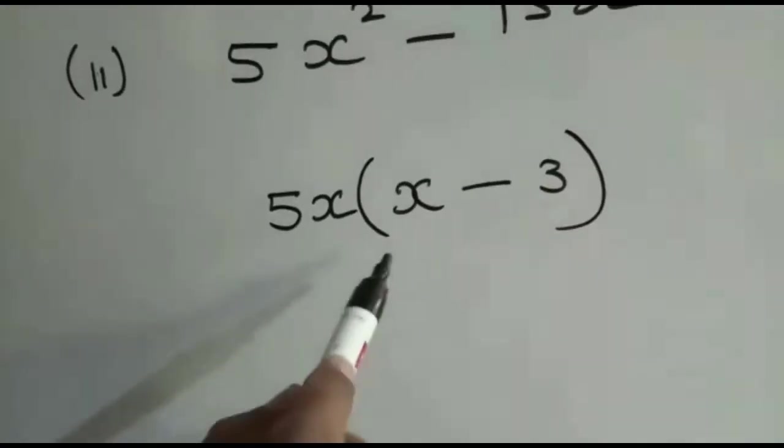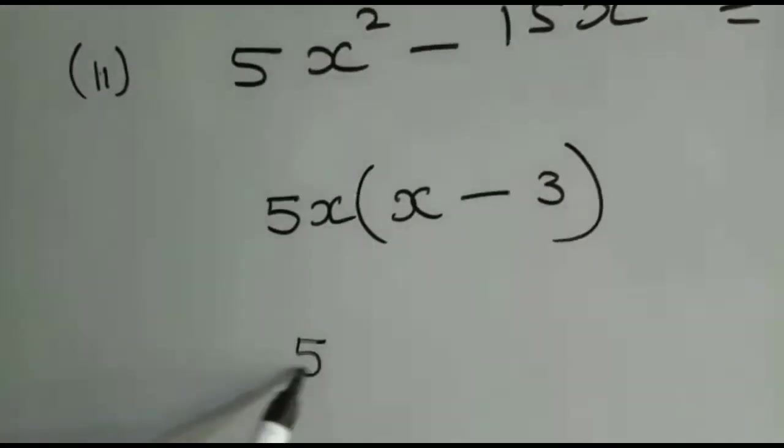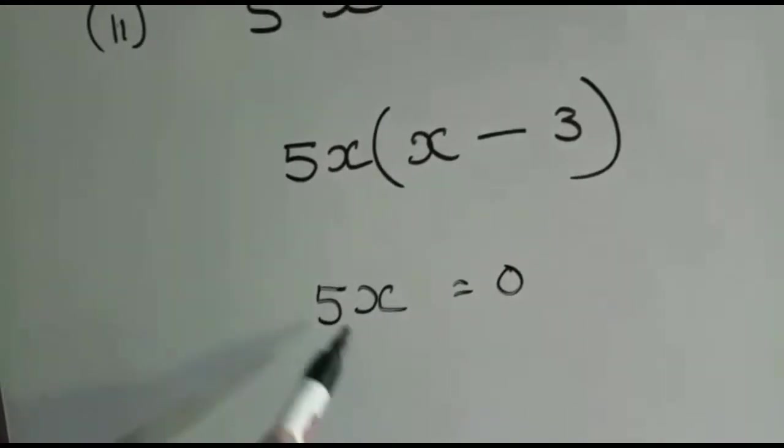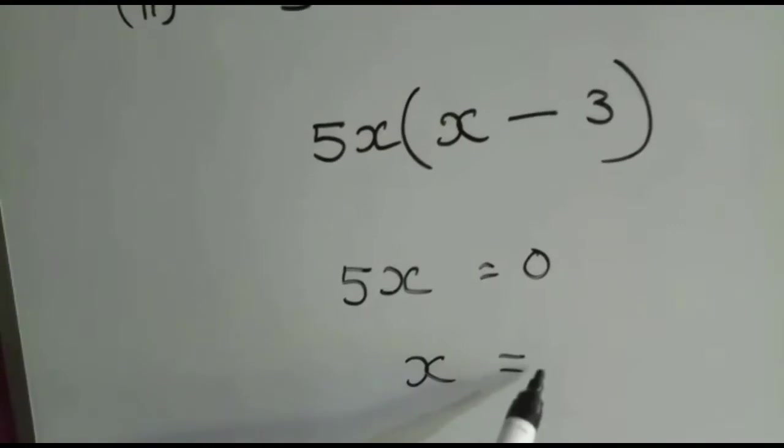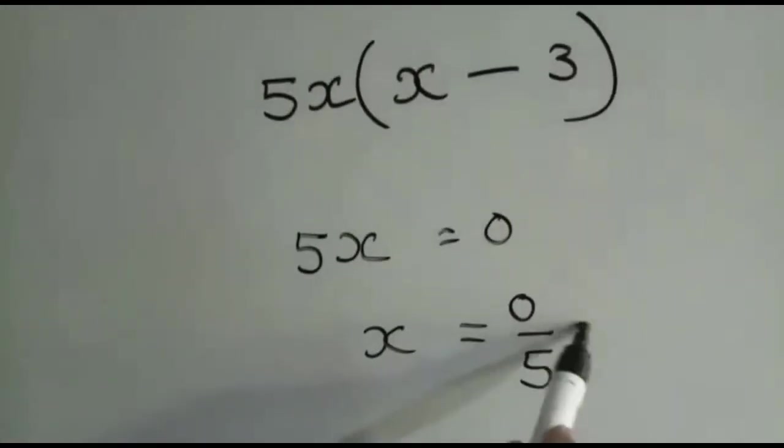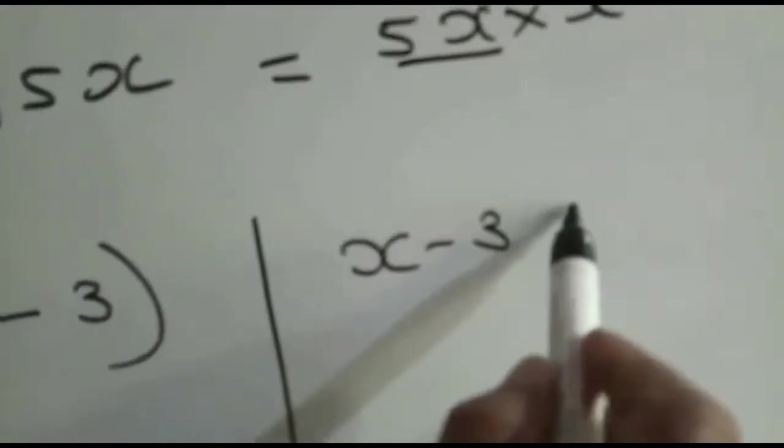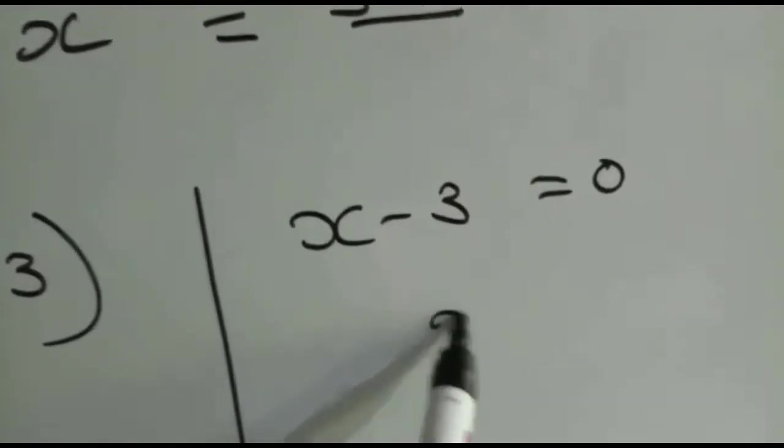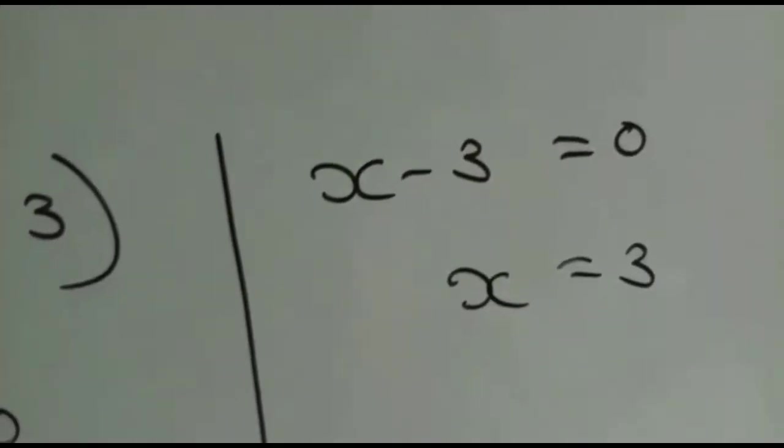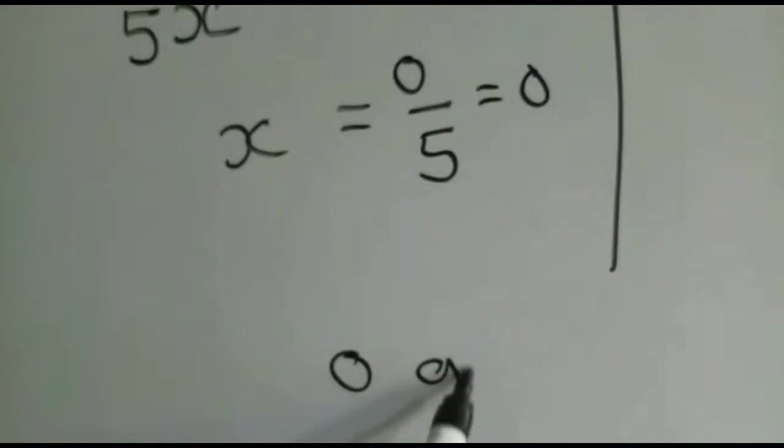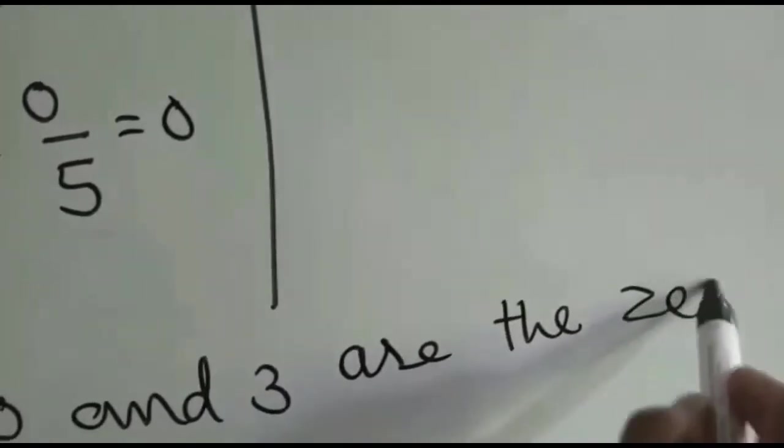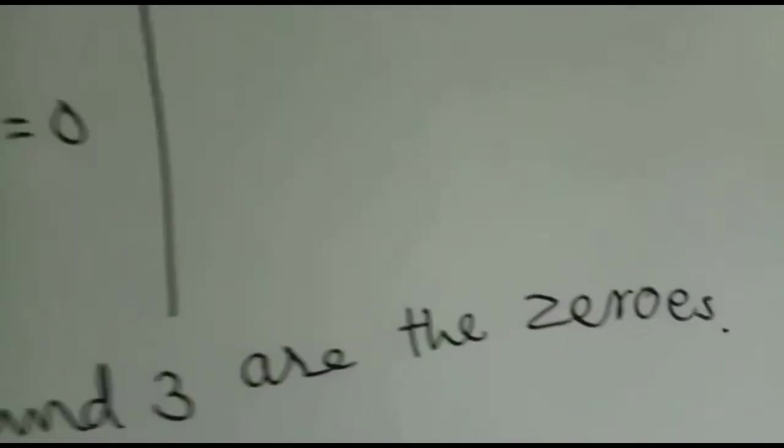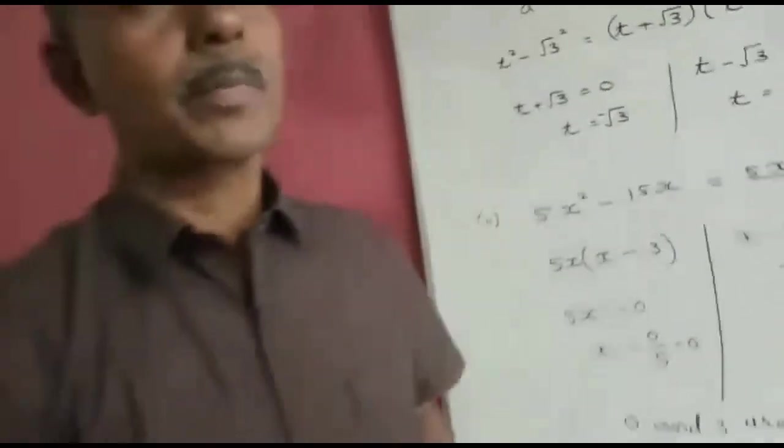Now we've factored it into two linear factors, which give us zeros 0 and 3. So you can see 0 and 3 are the zeros. Zero also can be a zero of a polynomial.